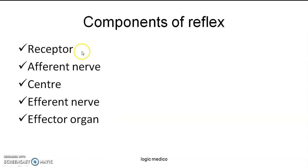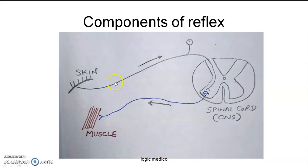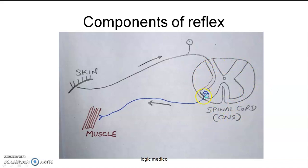Components of any reflex: a receptor, afferent nerve, center, efferent nerve, and the effector organ. The receptor gains information — for example, skin has touch receptors, pressure receptors, pain receptors, and temperature receptors. This information is carried to the spinal cord by a nerve called the afferent nerve. The spinal cord is a decision-making center and is part of the CNS, where the synapse is located.